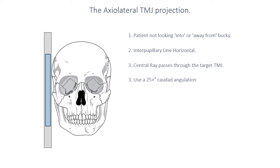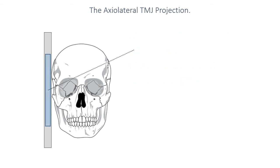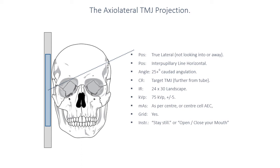You should end up with the superimposition of the target temporomandibular joint over the parietal bone on the non-affected side, so the smooth plate-like parietal bone will be projected behind the TMJ, and you should see that target TMJ quite well. The axial lateral TMJ projection is a true lateral with the affected side touching the image receptor, with a 25-degree caudal angulation passing through the parietal bone on the other side. Depending upon the queried pathology, it might be performed with the patient's mouth open or closed.